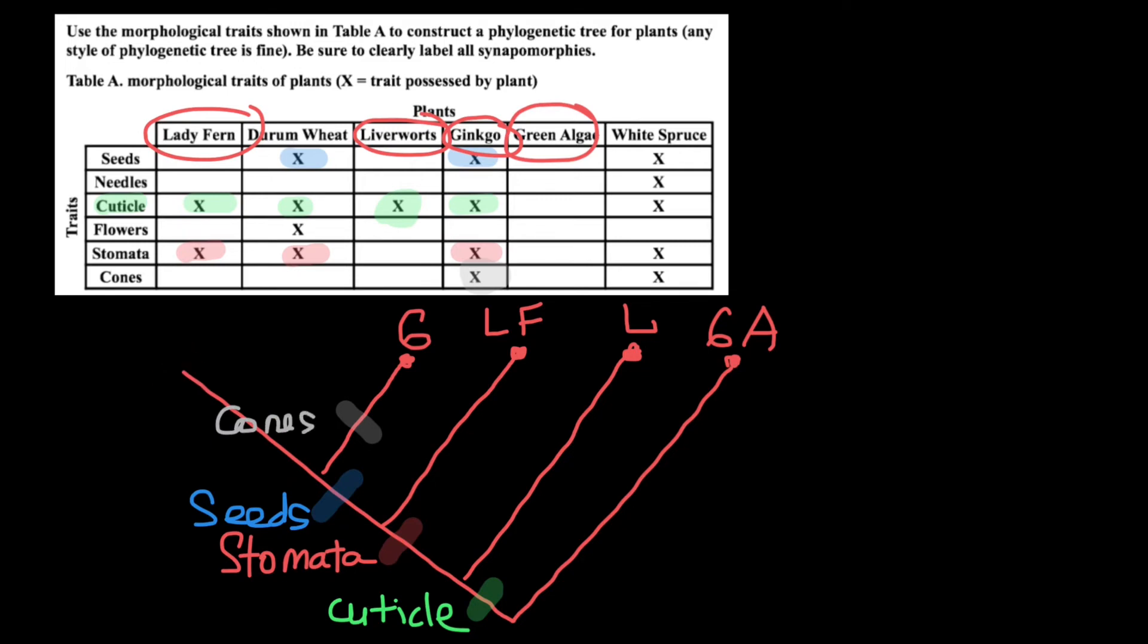And this also means that this tip of the branch have to be durum wheat. So let's put it here. So DW would stand for the durum wheat. And durum wheat has flowers, which for example ginkgo doesn't have. Let's also add a bar here, which would specify that these plants have flowers. So flowers. So according to our phylogenetic tree, for example durum wheat has all the traits, including flowers, but excluding cones. But ginkgo has all the traits, excluding flowers, but has cones.